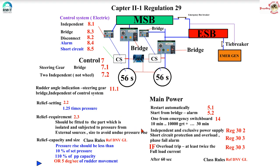Regulation 30.3 says that all steering gear motors and circuits should have short circuit protection, an overload alarm, and a phase failure alarm. A steering gear motor need not have an overload trip. There is much confusion here — many believe the main steering gear motor should never have an overload trip. Some candidates are very confident and categorical about this. But what does SOLAS actually say? Regulation 33 goes on to add that if a overload trip is provided — note it is optional — you can provide one.